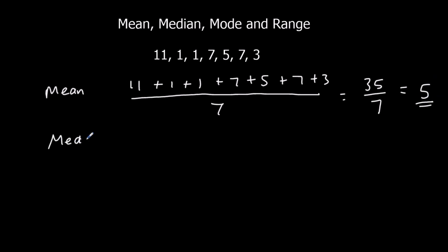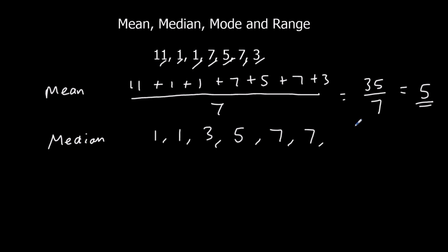The median is the middle number. First we put them in order: 1, 1, 3, 5, 7, 7, 11. We cross off from both sides — 1, 2, 3 from each side. This time we do have a number in the middle. It's 5, so the median is also 5.